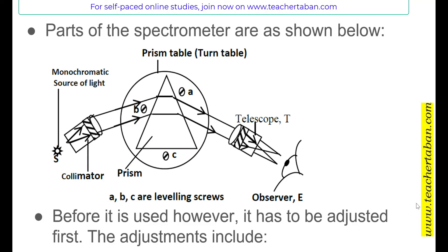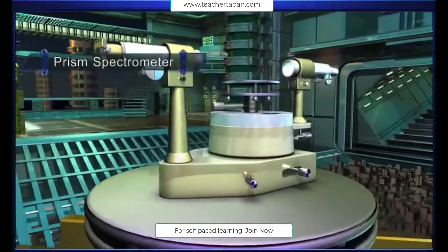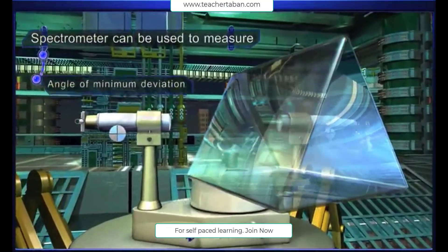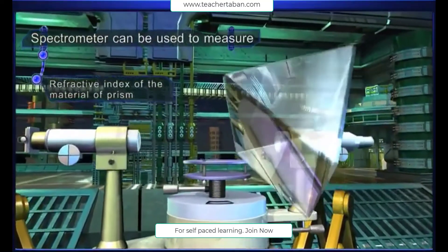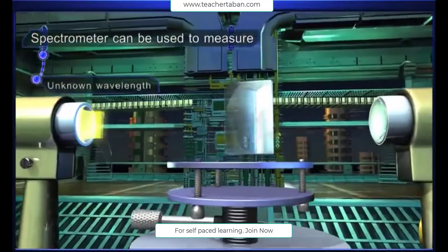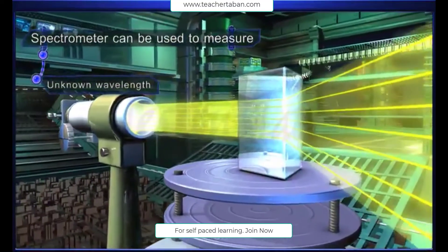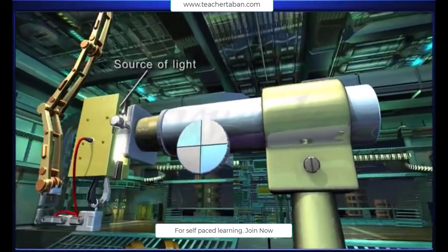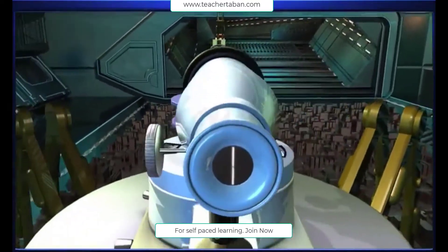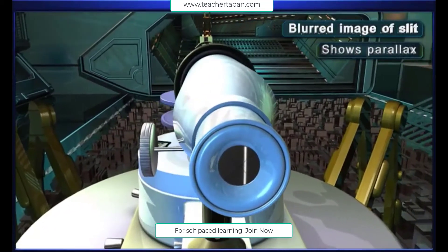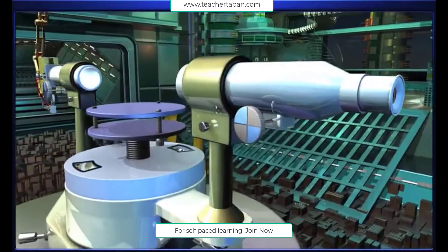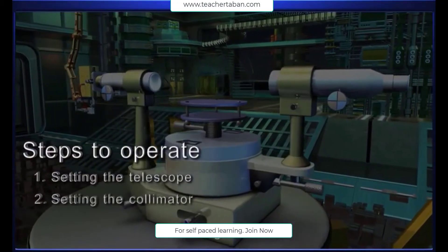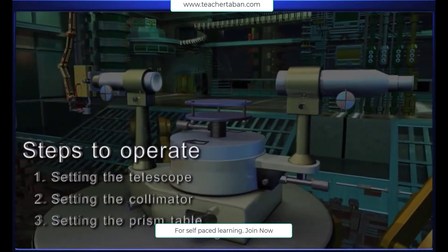A spectrometer is an optical instrument which can be used to measure the angle of a prism, the angle of minimum deviation, the refractive index of the prism material, or the unknown wavelength, etc. When a source of light is kept in front of the spectrometer, the image of the slit obtained will be blurred and shows a parallax. To rectify this, the prism spectrometer has to be set in three steps: first, setting the telescope; then, setting the collimator; and finally, setting the prism table.